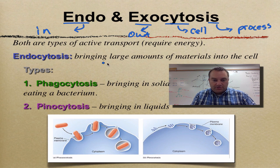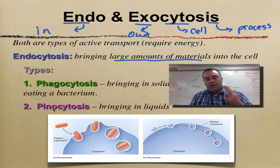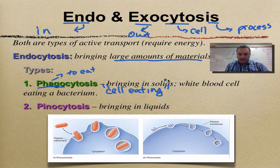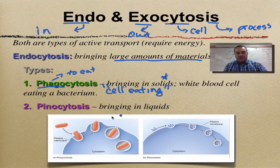Endocytosis — bringing in large amounts of materials at once — is done in two different ways. Number one is phagocytosis and number two is pinocytosis. The prefix phago means to eat, so phagocytosis really means cell eating — you're bringing in solids. For example, when a white blood cell finds a germ and eats it, that would be phagocytosis.